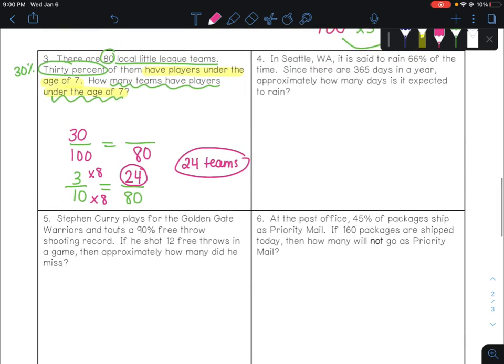Number 4. In Seattle, Washington, it is said to rain 66% of the time. So there's our percent. Since there are 365 days in a year, approximately how many days is it expected to rain? We need to figure out percent, part, whole. Percent is always the easiest one. 66%. So 66 over 100. And now, is this 365 only the days it rains? Or is it every single day? Well, considering the next part says how many days is it expected to rain, I think that 365 must be our whole value.